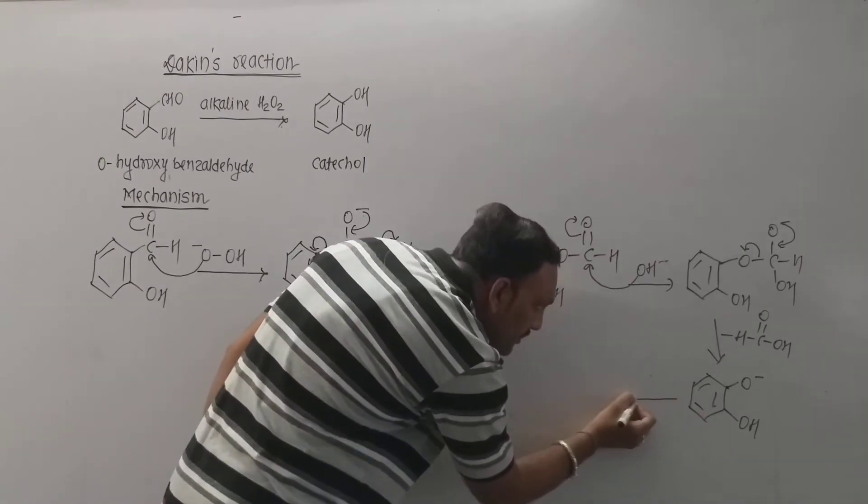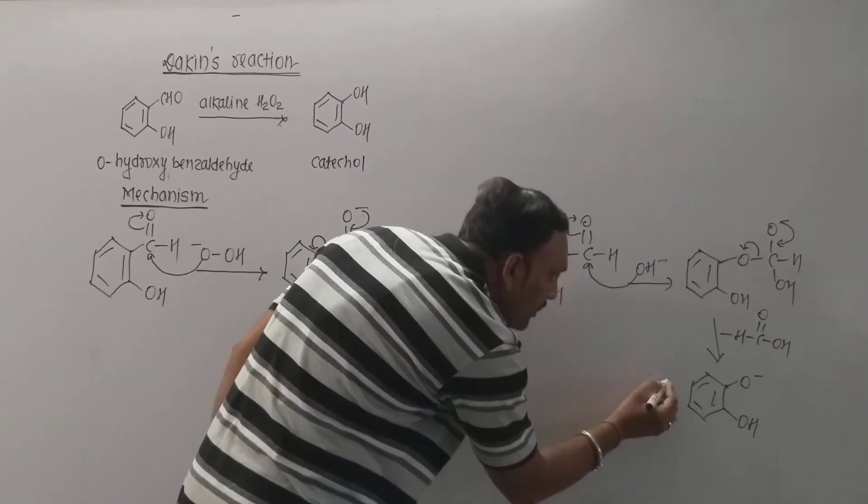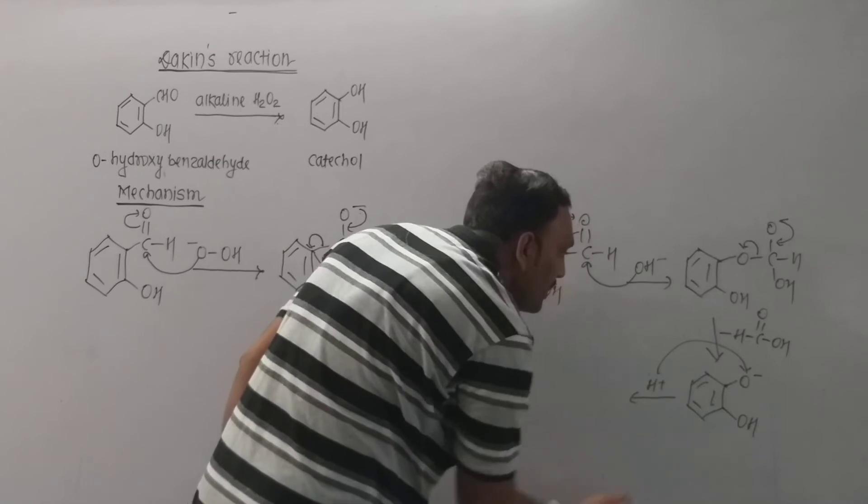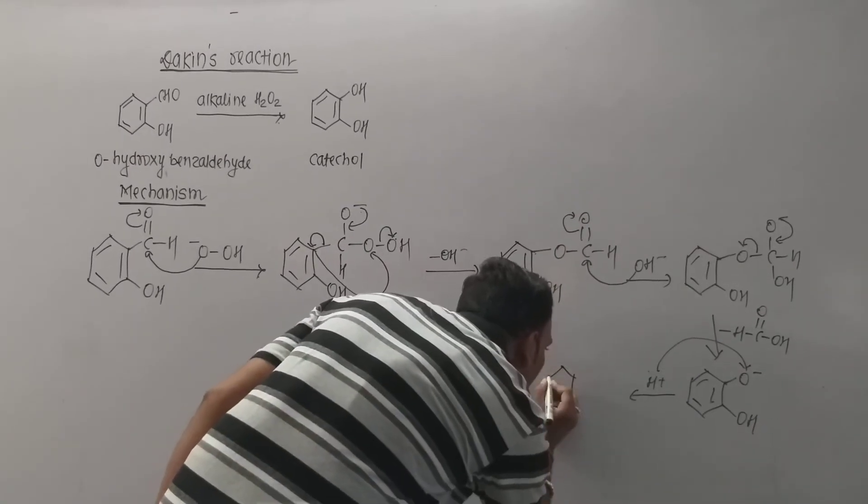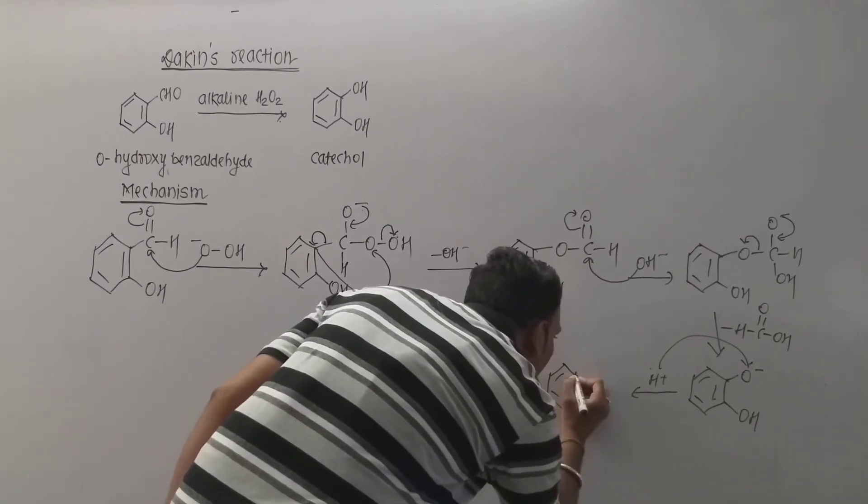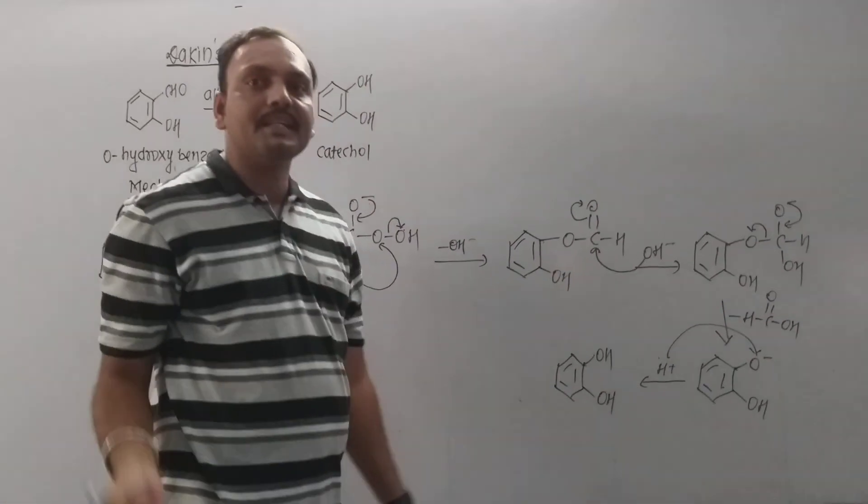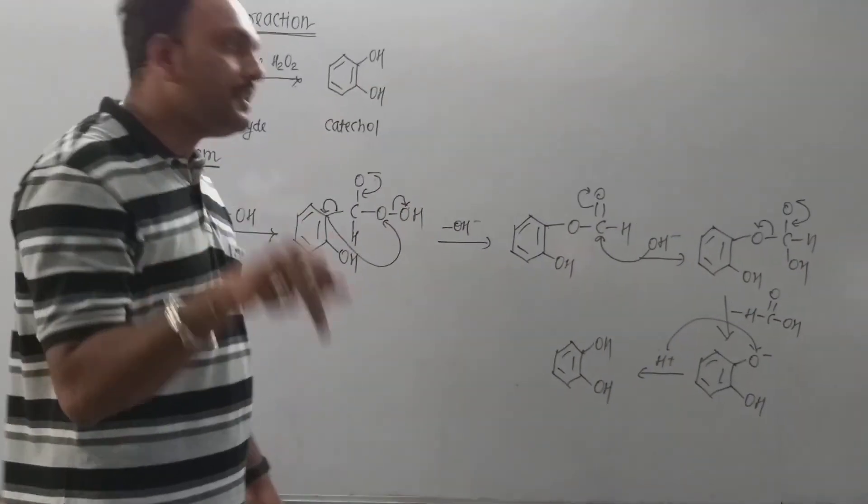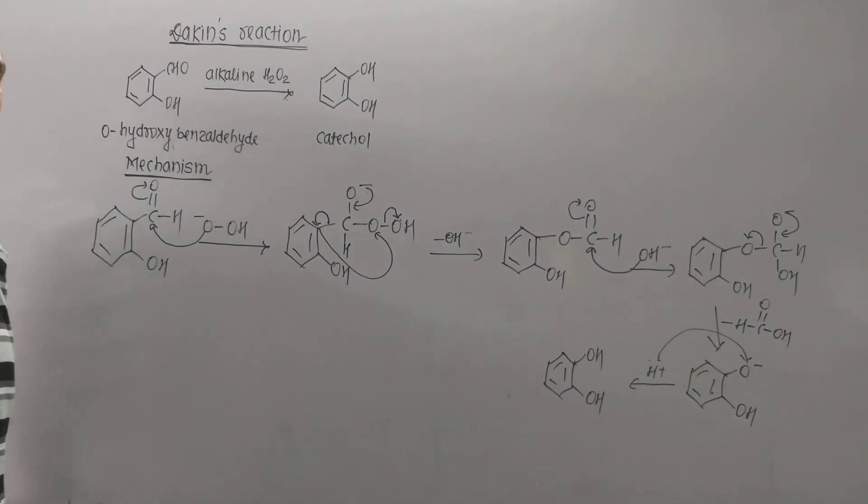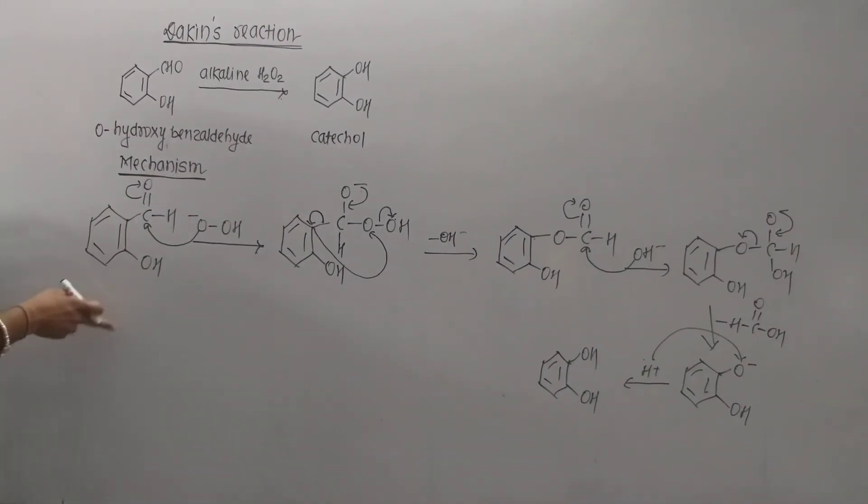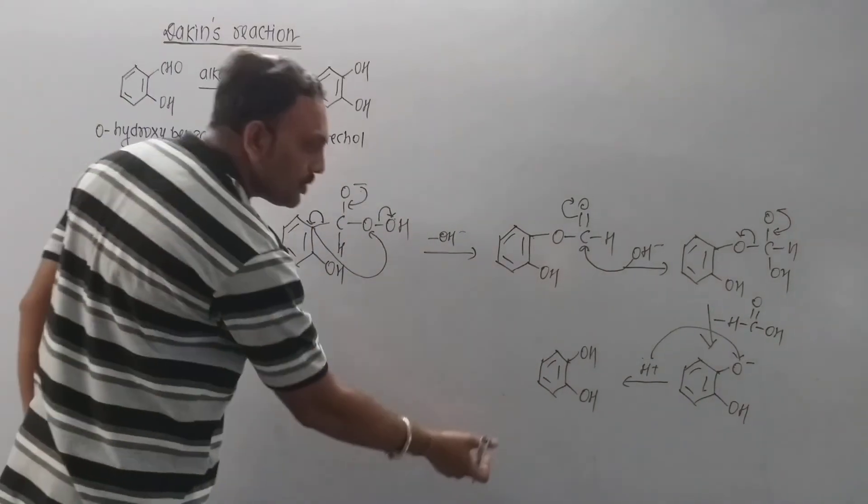Now this ion accepts proton from solvent, and by doing that, that leads to the formation of desired product catechol, that is dihydric phenol. Now, in this way, one can convert ortho-hydroxybenzaldehyde to catechol.